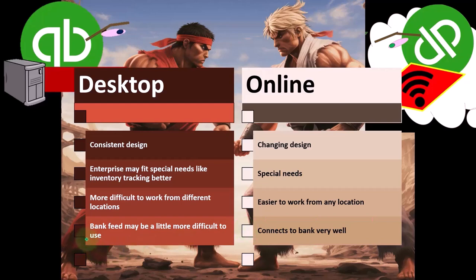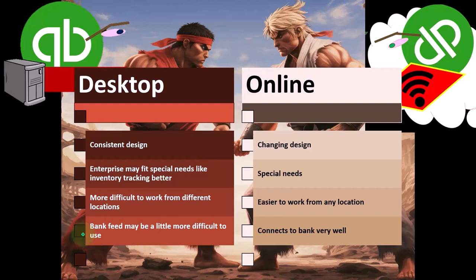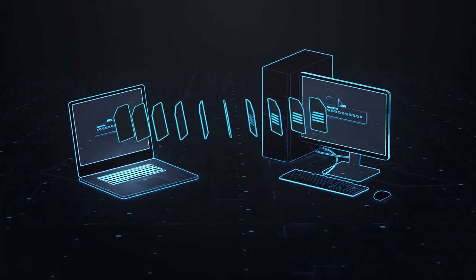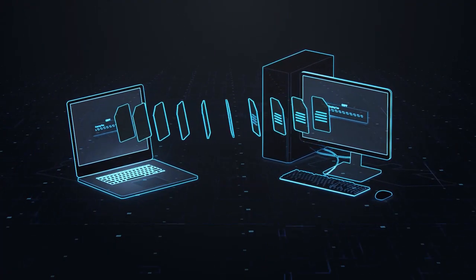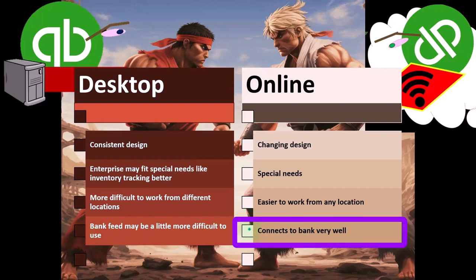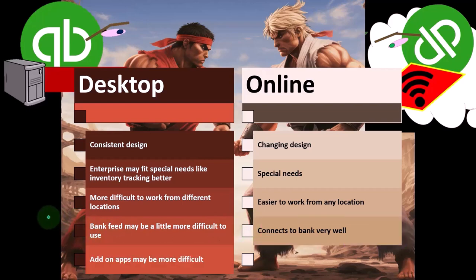The desktop version is pretty good — it works almost as well. But you might have to take one extra step to import the data from the bank feeds. Also, when you update the software every year, you might have an added step to make sure the bank feeds are properly aligned after the update. Whereas with the online version, once you set it up, it's pretty much connected seamlessly.